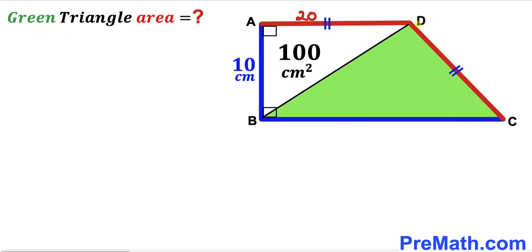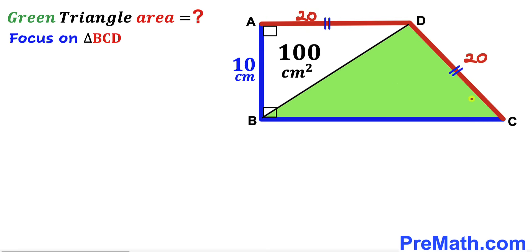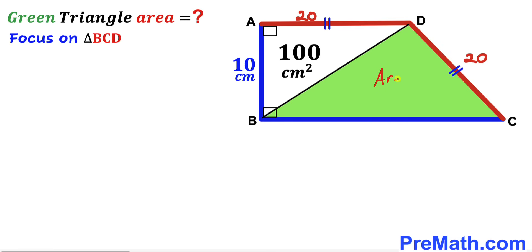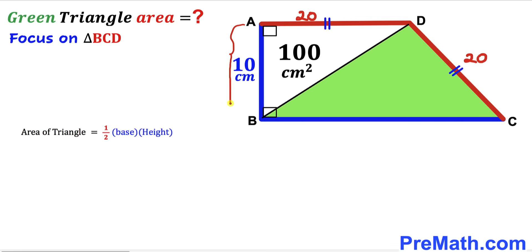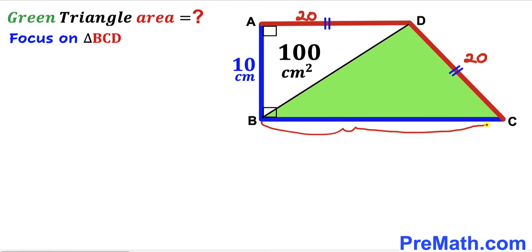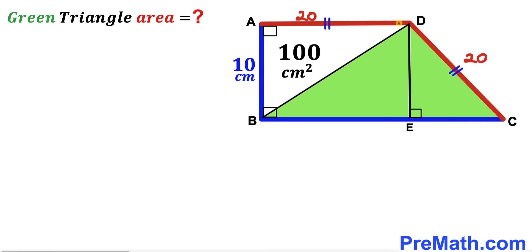We know that CD equals AD, so since AD is 20 centimeters, CD is also 20 centimeters. Now we focus on the green shaded triangle BCD and want to calculate its area. Using the area formula — one-half times base times height — the base is BC and the height is AB, which is 10 centimeters. Our only remaining task is to find the length BC.